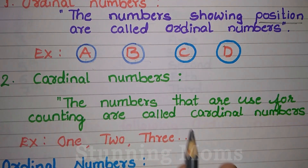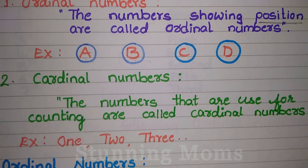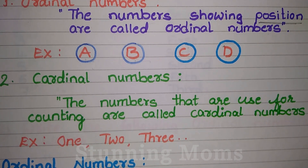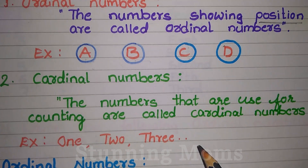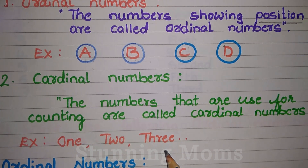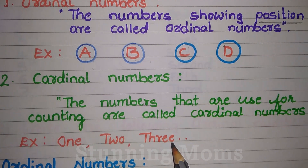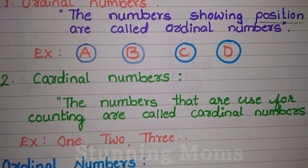I would like to explain the confusion again. Now let's explain the examples of ordinal and cardinal numbers. How many books are there? Three books are there. How many pencils are there? Two pencils are there. We are using the counting numbers here.